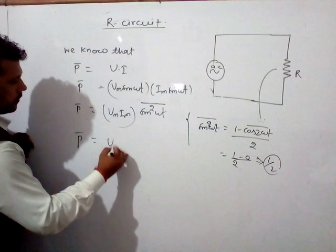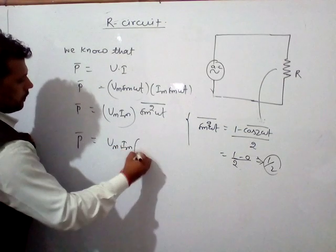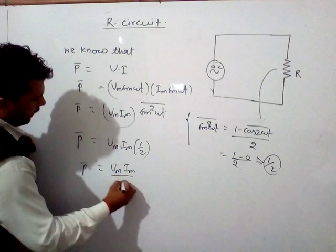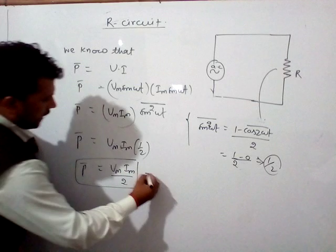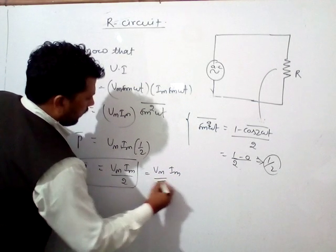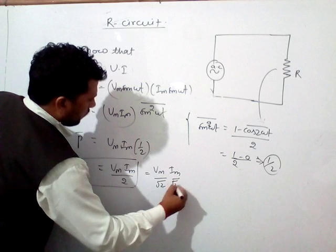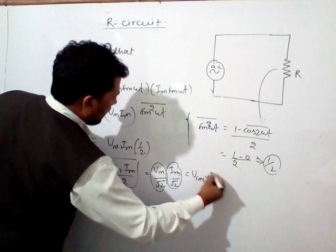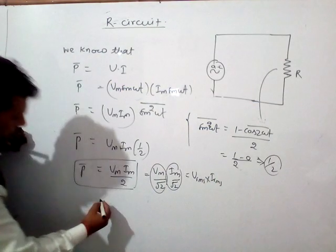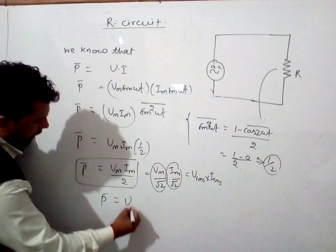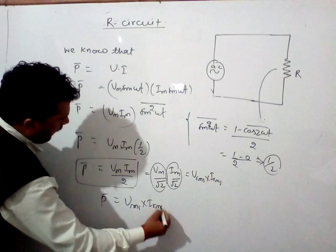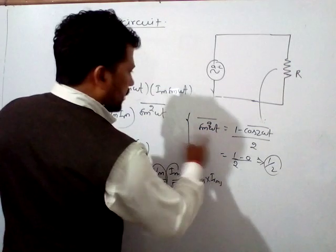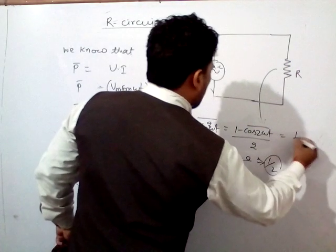So P-bar equals Vm times Im times 1/2, which is Vm times Im divided by 2. This can be written as (Vm/√2) times (Im/√2), giving P-bar equals Vrms times Irms.